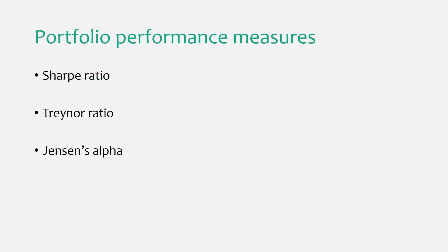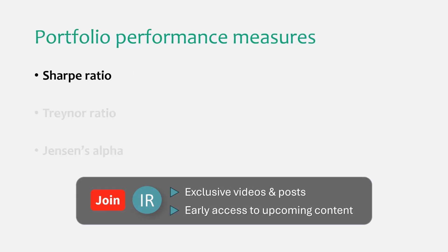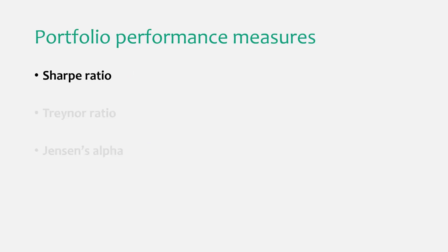In this tutorial, we'll be learning about three popular portfolio performance measures: Sharpe Ratio, Treynor Ratio, and Jensen's Alpha. There are timestamps in the video description, so if you would like to jump ahead to a particular measure, feel free to do so. Let's get started with the Sharpe Ratio.